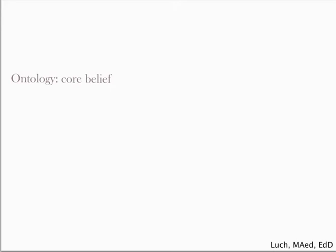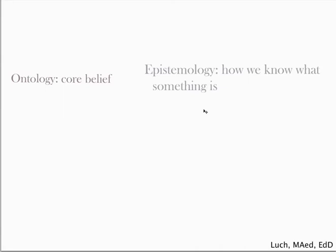I'm going to make certain assumptions when I write or evaluate a research paper. Those assumptions come from a combination of ontology and epistemology — which is how do we know what something is. If somebody tells you they are a constructivist, cognitivist, or holistic, those are epistemological points of view. It's important as a researcher to understand the difference between a point of view, how we know something, and what our core beliefs are.